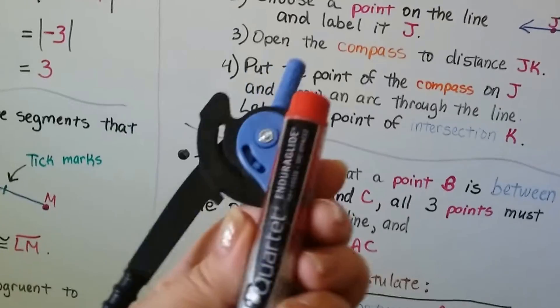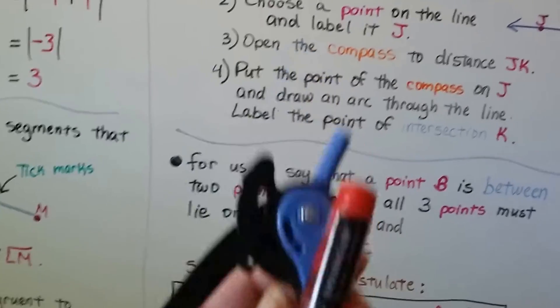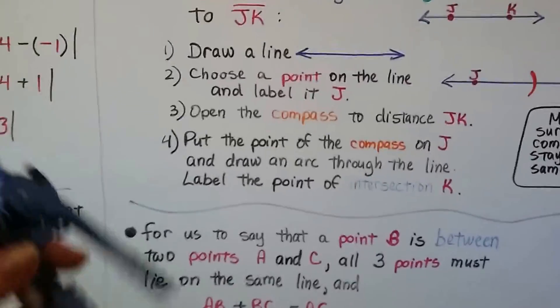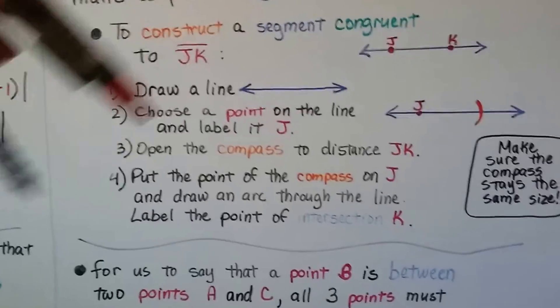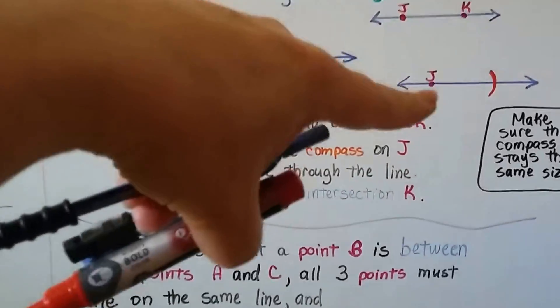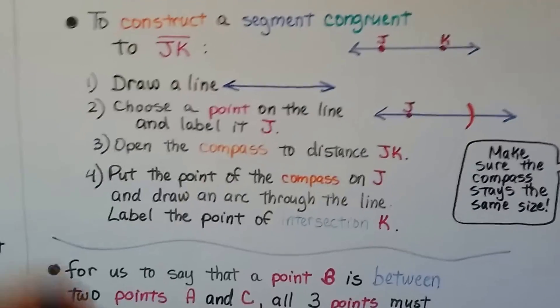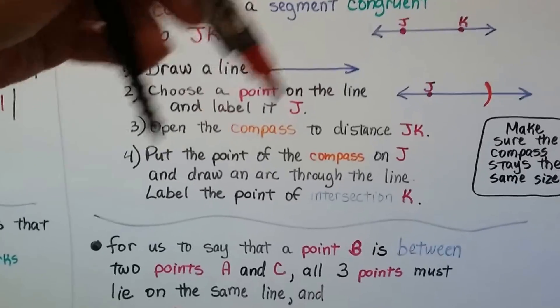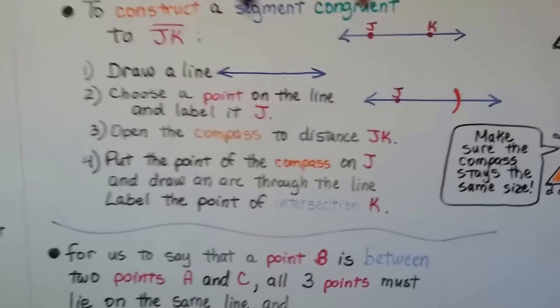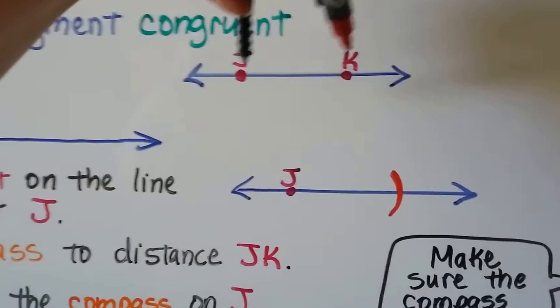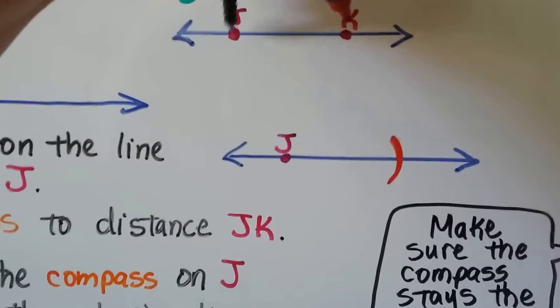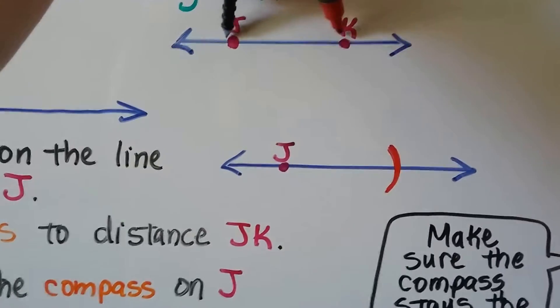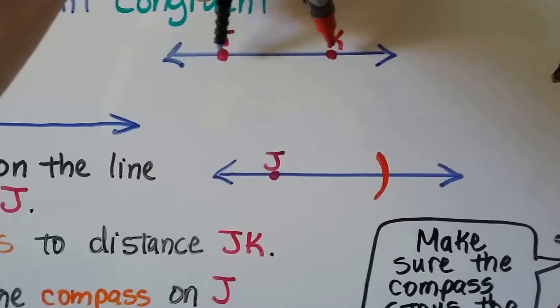I don't know if you can see on this curve right here, but there's measures. See the measures? The little lines? So what we do is we choose a point on the line and label it J, like we did right here. We open the compass to the distance JK right here. So we're gonna go like this and put the point on the J and we're gonna open it so it's the same distance. There we go. That's about right, isn't it? That's about the same.